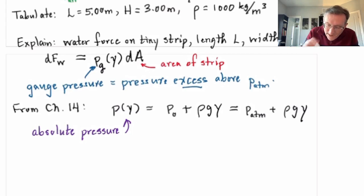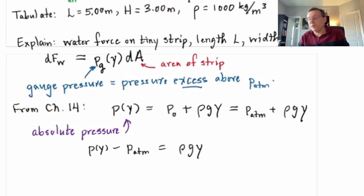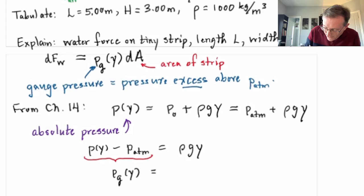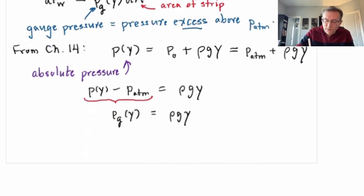Now, what I want though is so-called gauge pressure from the water, the excess above atmospheric. Well, just take this equation and subtract p_atmospheric from both sides. So the absolute pressure at y minus atmospheric pressure equals rho g y. But the absolute pressure minus atmospheric is the excess pressure above atmospheric. That's exactly what we mean by the gauge pressure. So this is p_g of y, and that's then just given by the simple expression rho times g times y.